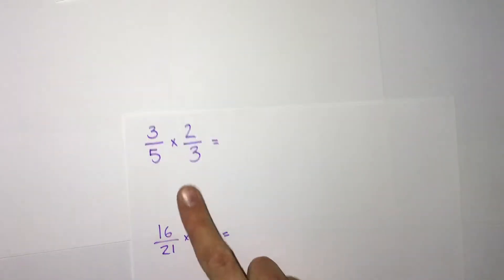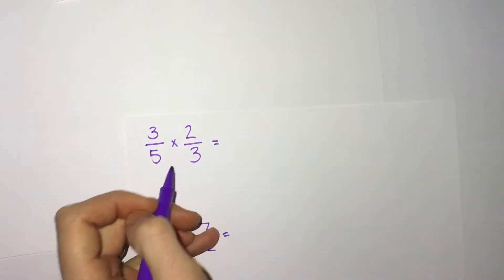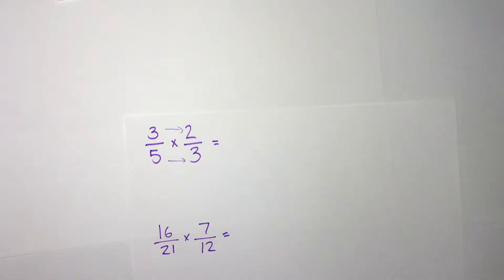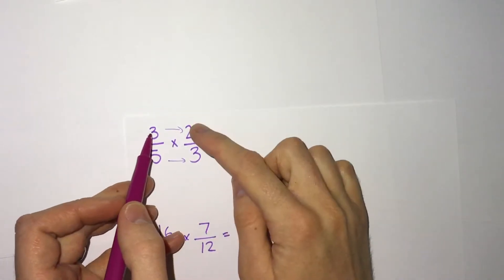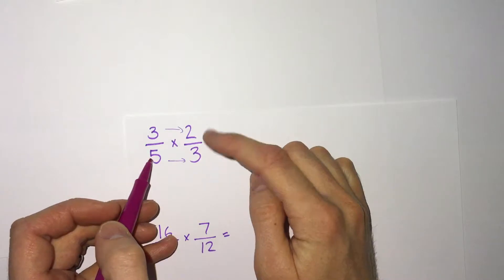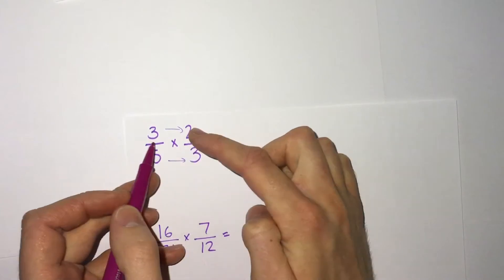We have the example 3 fifths times 2 thirds — we'll be looking at multiplying first. One of the nice things about multiplying fractions is we don't have to change anything; we can multiply straight across: multiply across the top, multiply across the bottom, and get our answer. Something we can do before we multiply is look and see if either of the numbers on the top simplify or cancel with either of the numbers on the bottom. We can cancel not only within a fraction, but across fractions too.